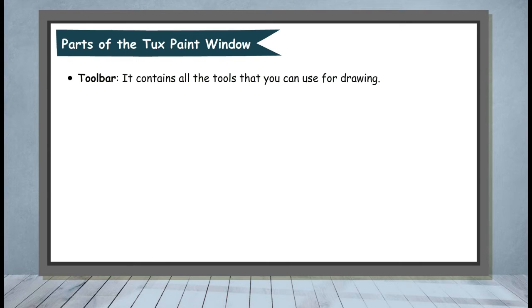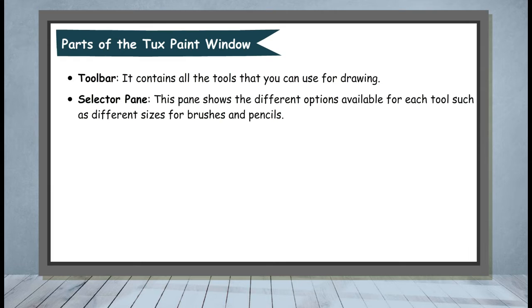Toolbar: It contains all the tools that you can use for drawing. Selector Pane: This pane shows the different options available for each tool, such as different sizes for brushes and pencils.